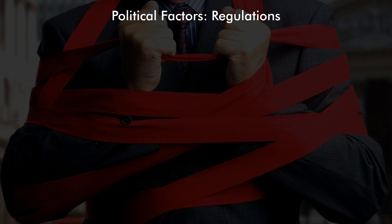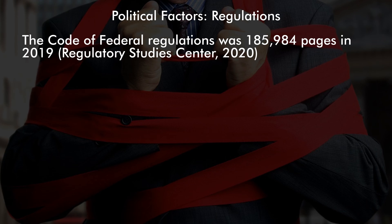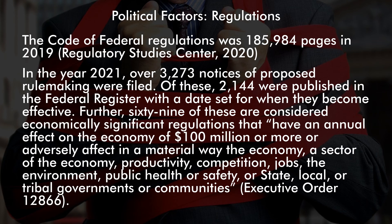Governments also have a strong influence with their regulations, and in the U.S. the amount of regulations increases every year. In 2019, the federal regulations alone were 185,000 pages. In 2021, there were over 3,000 notices of new rulemaking filed, over 2,000 of these were added to the Federal Register, and 69 of these had significant regulations with the impact of $100 million or more. It's important to note that while all firms tend to not like regulations, regulations tend to help incumbent firms — especially larger firms — because they have the resources to deal with them, and regulations also serve as a barrier to entry.